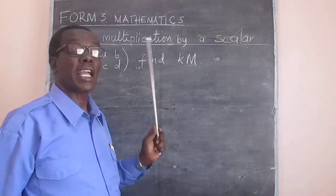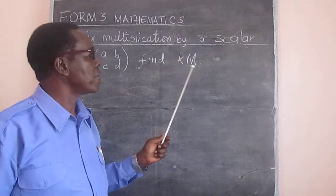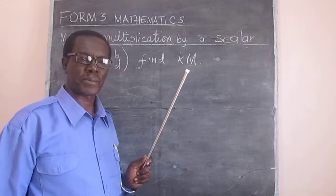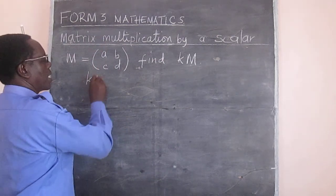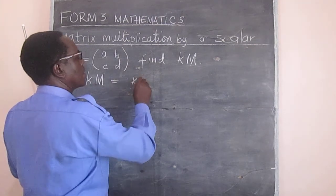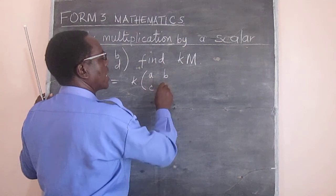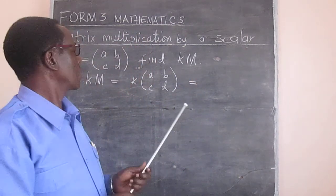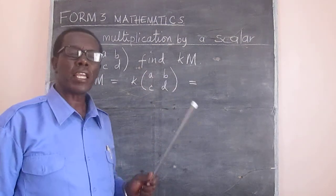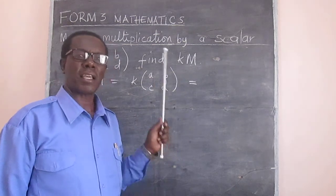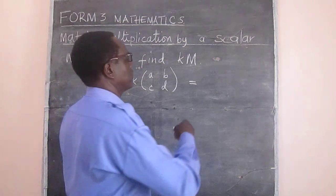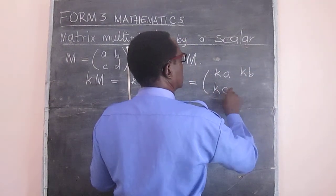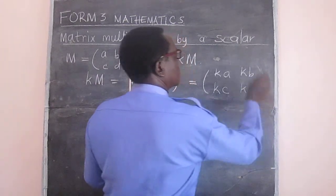The idea is very simple. You just make sure that every element in the matrix is multiplied by K. So KM will now be equal to K multiplied by A, B, C, and D. We just make sure that every element in the matrix is multiplied by the scalar. It is as simple as that.